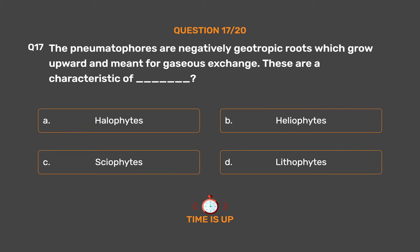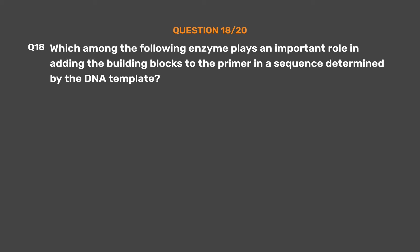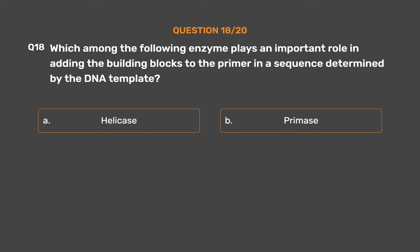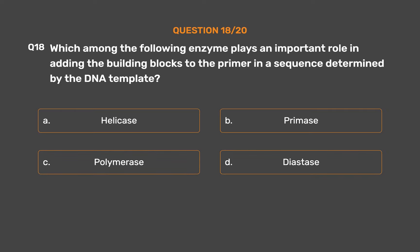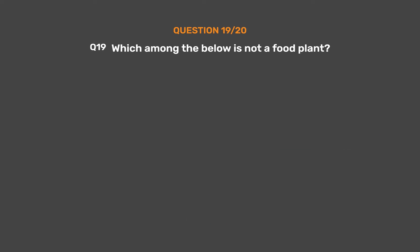Question number eighteen. Which among the following enzymes plays an important role in adding the building blocks to the primer in a sequence determined by the DNA template? Option A: Helicase. Option B: Primase. Option C: Polymerase. The correct answer is Option C: Polymerase.